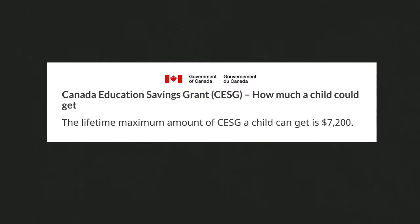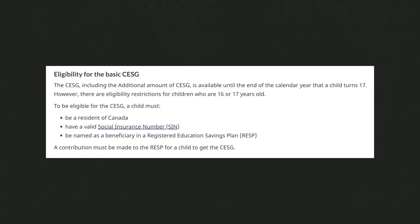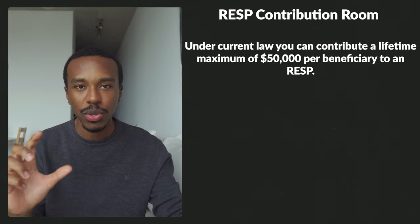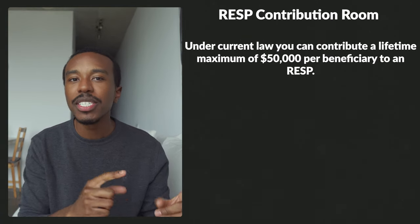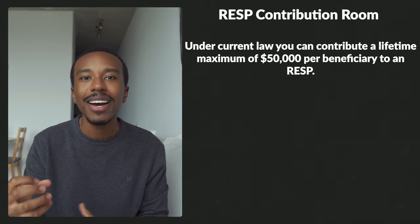On the flip side, if you only add in $1,000 per year, the government would only put in $200. Even though they're willing to give you $500 a year, there is a total lifetime maximum amount they're willing to part with, and that's $7,200. The government also only matches $500 a year up until the kid turns 17, so you really want to maximize those contributions up until that time. After the kid turns 17, you can still add money into the RESP up to a max of $50,000.